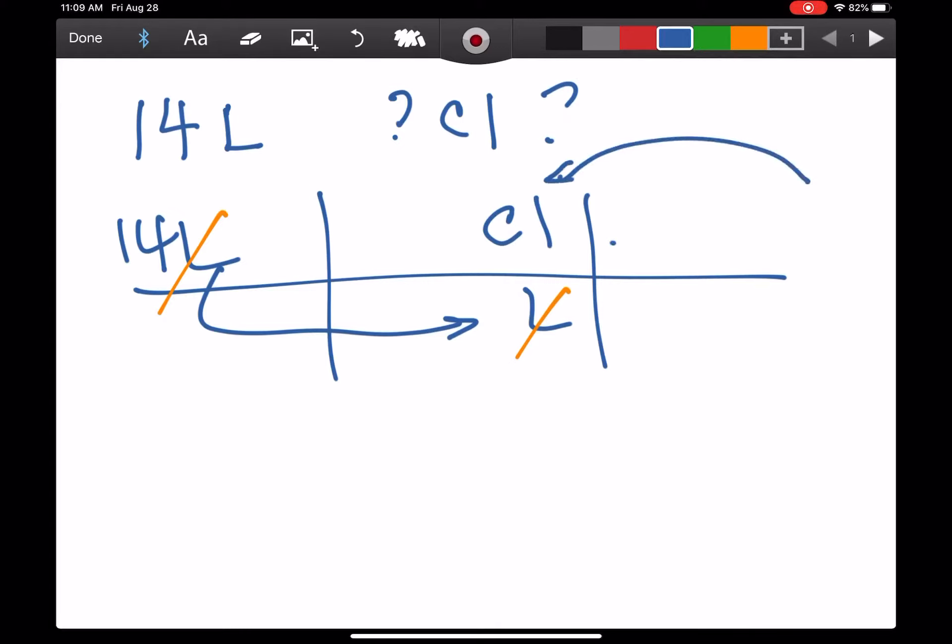The units that I want to solve for are always on the top. When you look at what do I want to solve for - centiliters - those units need to appear on the top because they will be left over, which is why they're going to end up in the answer.